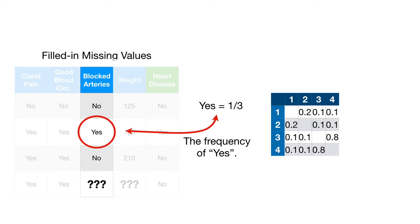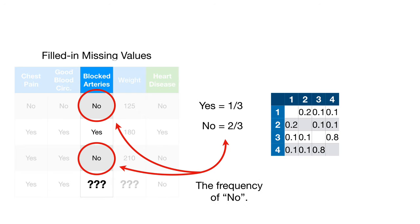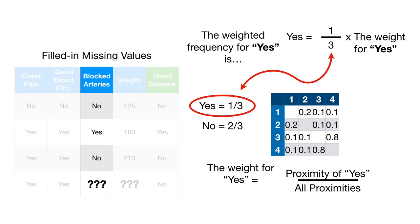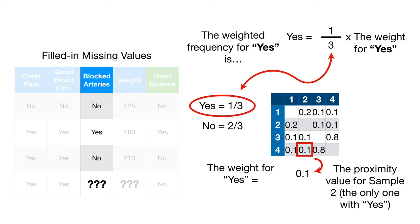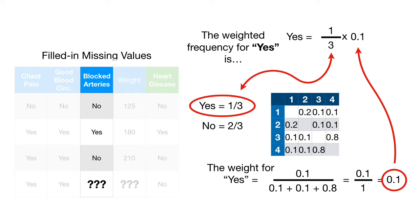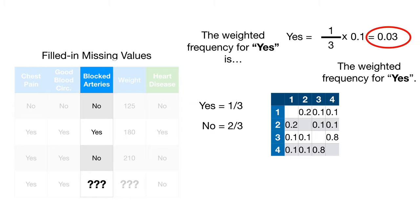Yes occurs in one-third of the samples. No occurs in two-thirds of the samples. The weighted frequency for yes is the frequency of yes times the weight for yes. The weight for yes equals the proximity of yes divided by all of the proximities. The proximity for yes is the proximity value for sample two, the only one with yes. And we divide that by the sum of the proximities for sample four. So the weight for yes is 0.1. Thus, the weighted frequency for yes is 0.03.